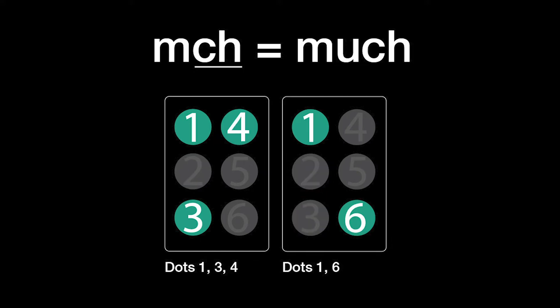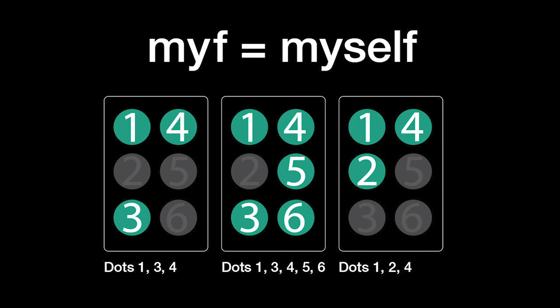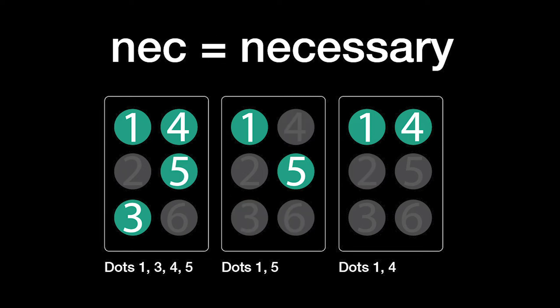Much is M plus CH: dots 1, 3, and 4, plus dots 1 and 6. Must is M plus ST: dots 1, 3, and 4, plus dots 3 and 4. Myself is M-Y-F: dots 1, 3, and 4, plus dots 1, 3, 4, 5, and 6, plus dots 1, 2, and 4. Necessary is N-E-C: dots 1, 3, 4, and 5, plus dots 1 and 5, plus dots 1 and 4.